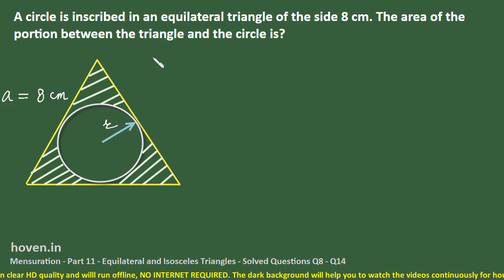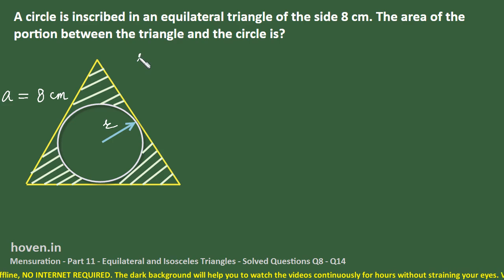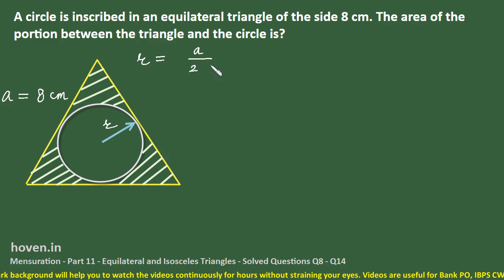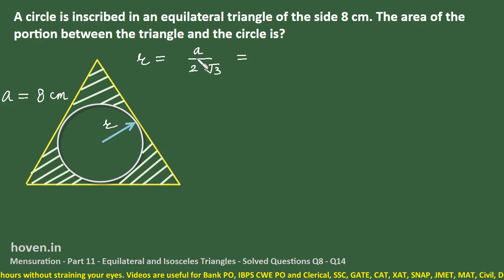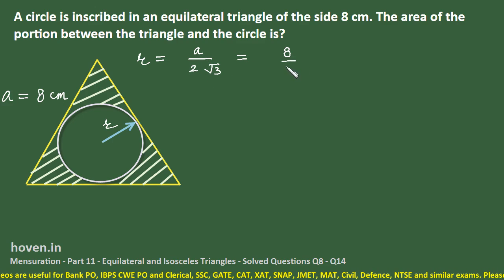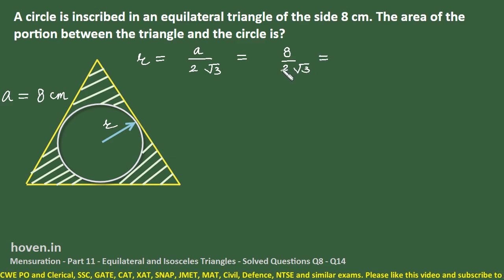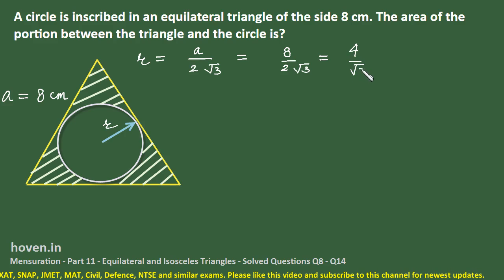As seen in our previous video tutorials, this radius called the inradius is given by the formula A divided by 2√3. We have already derived this formula. Since A is equal to 8, we substitute A = 8 to get 8 divided by 2√3, which equals 4/√3.